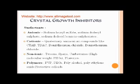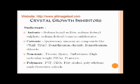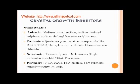Crystal growth inhibitors: mainly surfactants are used for inhibiting crystal growth. Surfactants are of three types: anionic, cationic, and nonionic. Polymers mainly used are PVP, PEGs, polyalcohol, polyethylene oxide, and protective colloids. In nonionic surfactants, Pluronics are mainly used. Pluronics is the trade name for poloxamers, which are nonionic tri-block copolymers.